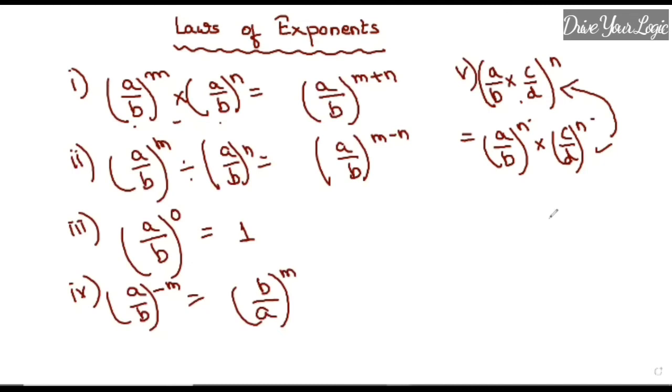In this way you can do many sums. One more law is there: (a/b)^m and outside one more power is here, you can multiply these two powers, so it will become (a/b)^(m×n). Clear?